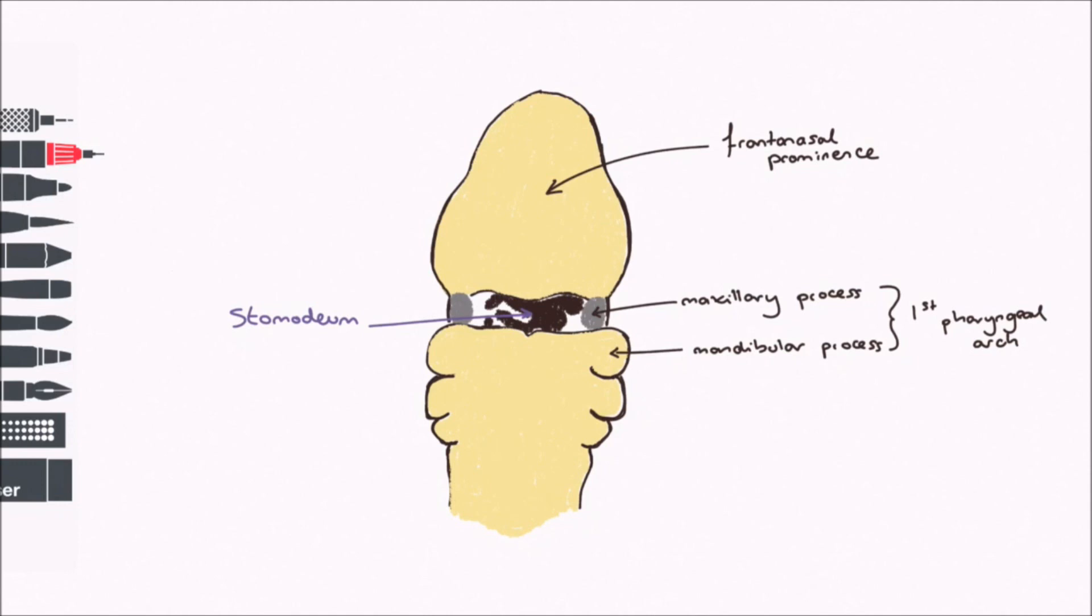Let's move on to the fifth week. On the frontonasal prominence, ring-like bilateral thickenings develop. These are called the nasal placodes. The edge of the placode enlarges, and the middle becomes pitted to form the nasal pits. The lateral edge of each placode is called the lateral nasal prominence. The medial edge of each placode is called the medial nasal prominence.